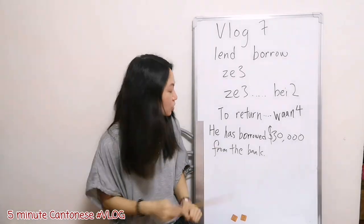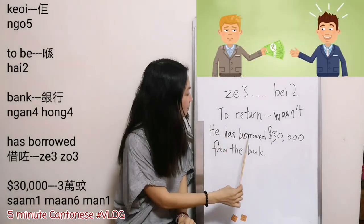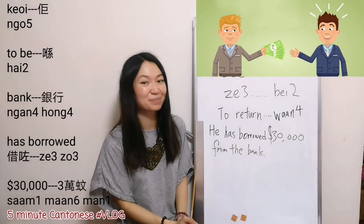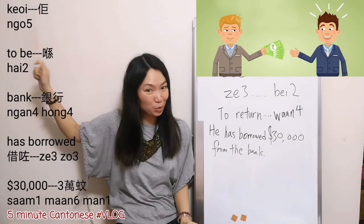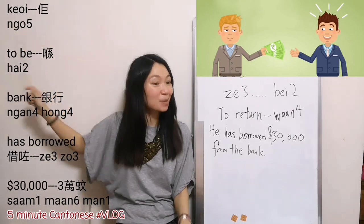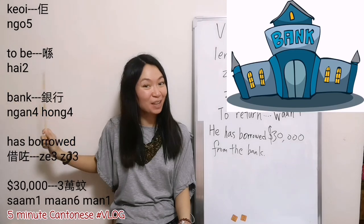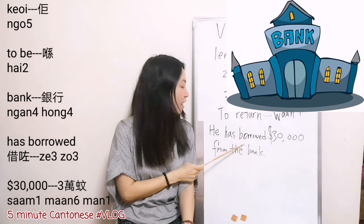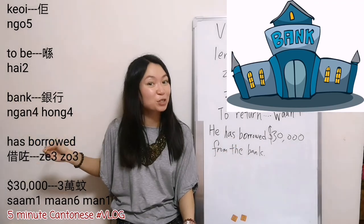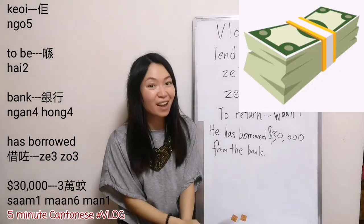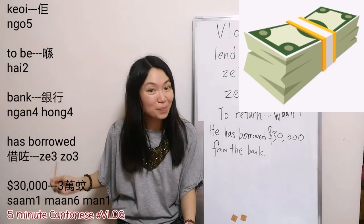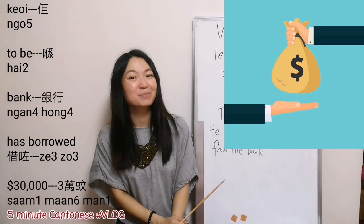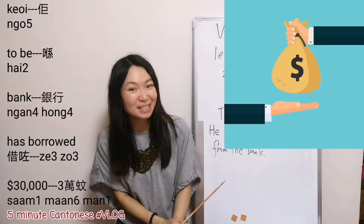So now, similar structure — you try: 'He has borrowed $30,000 from the bank.' He, 喺, and then bank — remember 銀行 — 喺銀行, has borrowed 借了, $30,000, 三萬元. 她喺銀行借了三萬元.